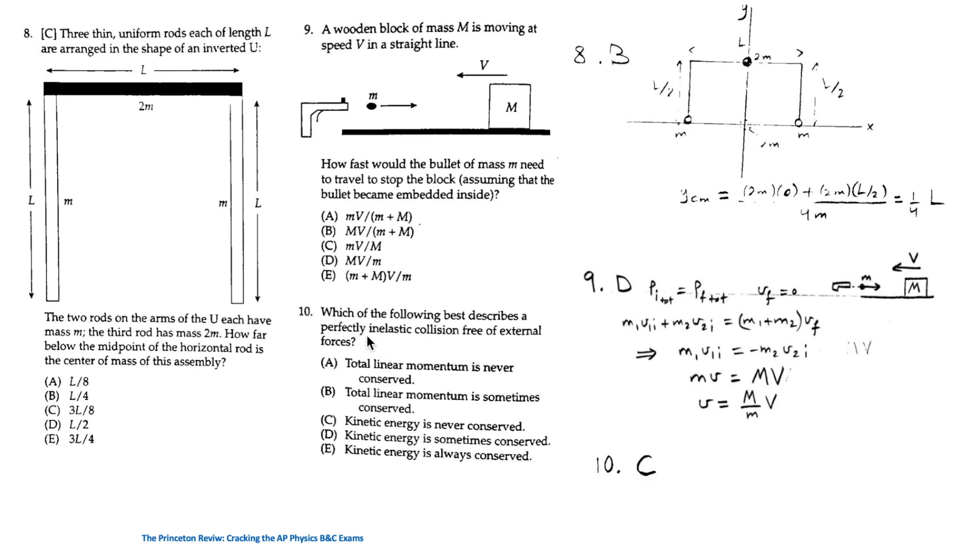For question 10, which of the following best describes a perfectly inelastic collision free of external forces? The answer is C which is the kinetic energy is never conserved because some of it is lost. That's because it's a perfectly inelastic collision.